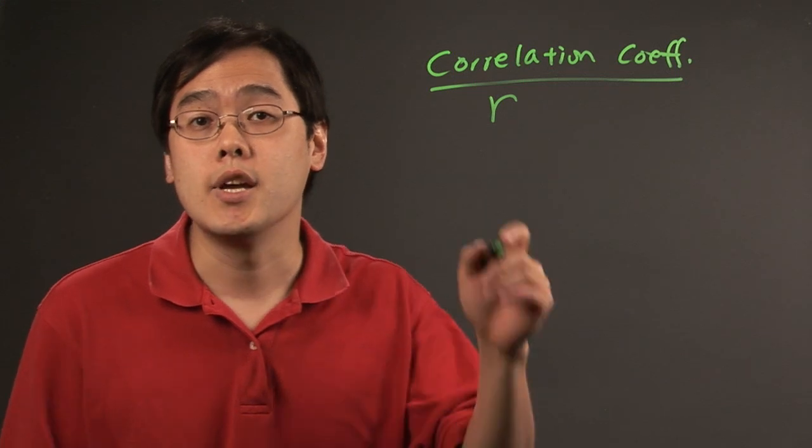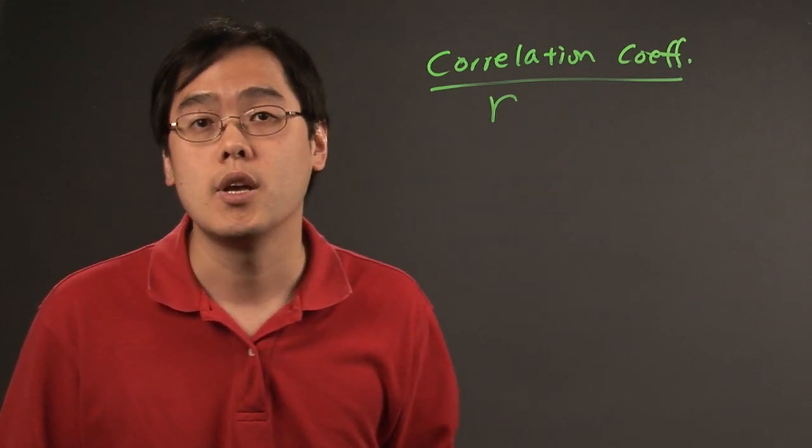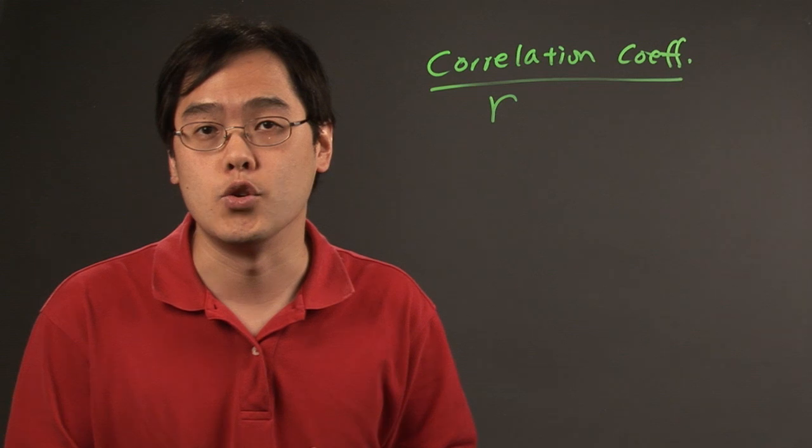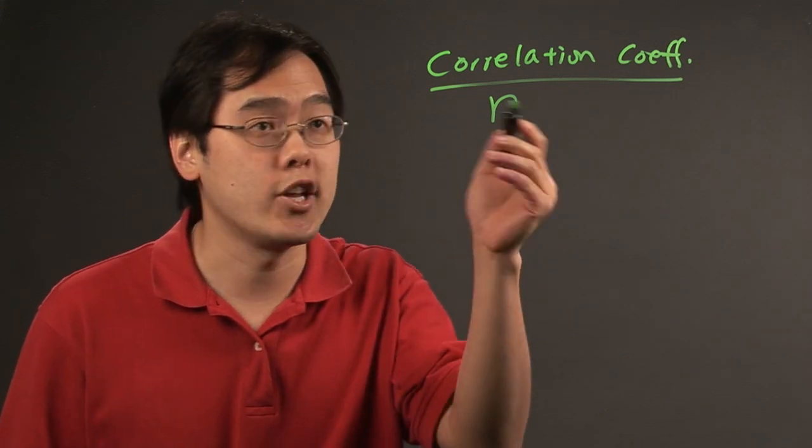The bottom line is the correlation coefficient r determines the strength and direction between the two variables and the relationship is going to be linear.